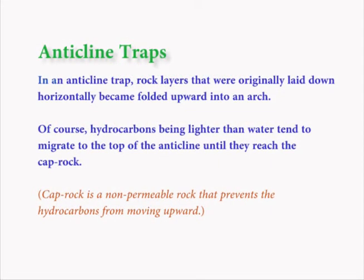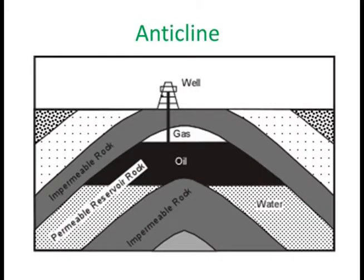Let's first talk about anticline traps. In an anticline trap, rock layers that were originally laid down horizontally become folded upward into an arch. Hydrocarbons, being lighter than water, tend to migrate to the top of the anticline until they reach the cap rock. Cap rock is a non-permeable rock that prevents hydrocarbons from moving upward. Anticline traps are structural traps.